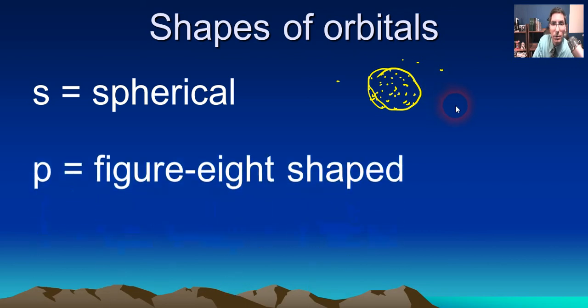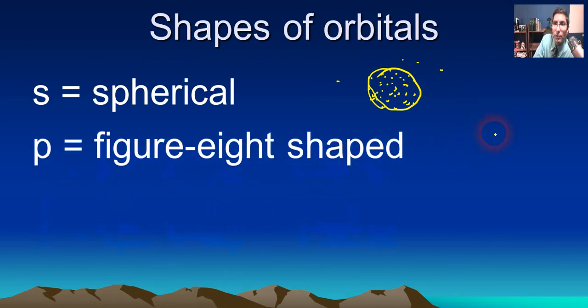Now, p orbitals, if we were to, here's the nucleus, and if we were to imagine where the electron could be buzzing around here at different moments in time, then we could probably get a shape that would look kind of like this. It's kind of a figure-eight shaped, or maybe a dumbbell shaped, something like that. Occasionally the electrons will venture out of there, but most of the time they're in that figure-eight shape.